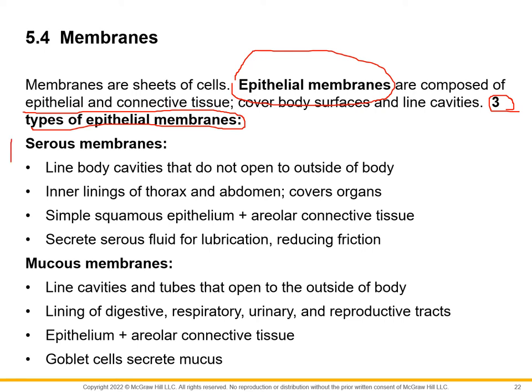The first type are called serous membranes. Serous membranes are the ones that line the body cavity and are on the organs. Remember the serous membranes: the visceral peritoneum and the parietal peritoneum, the visceral pericardium and the parietal pericardium, and the visceral pleura and parietal pleura — those are the serous membranes.